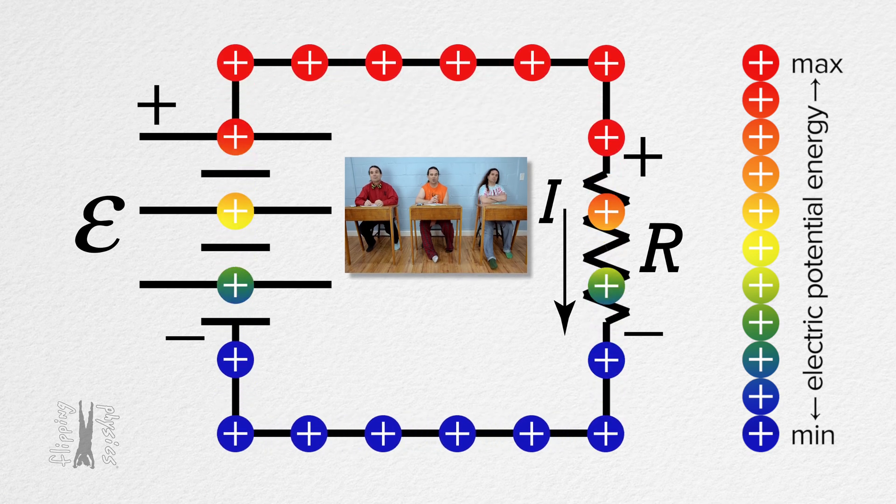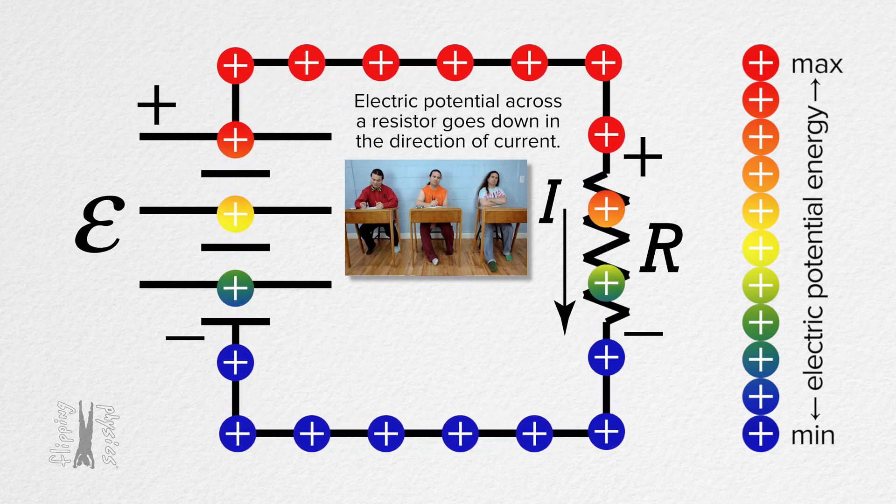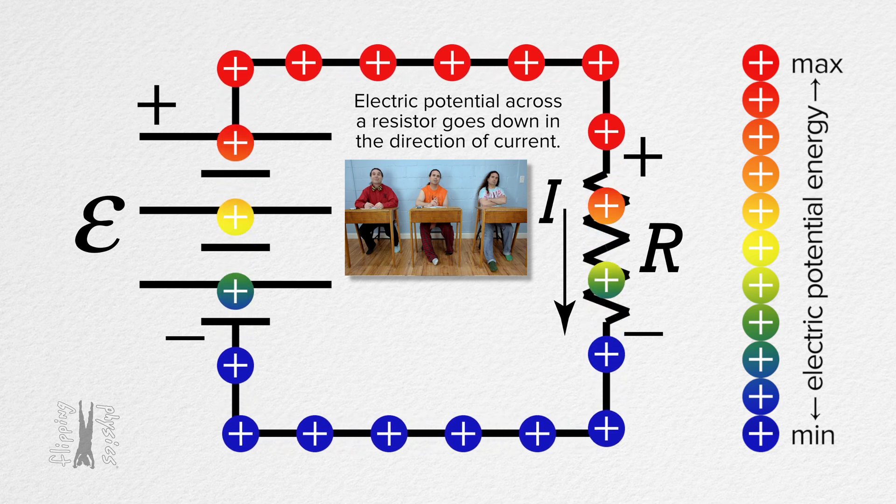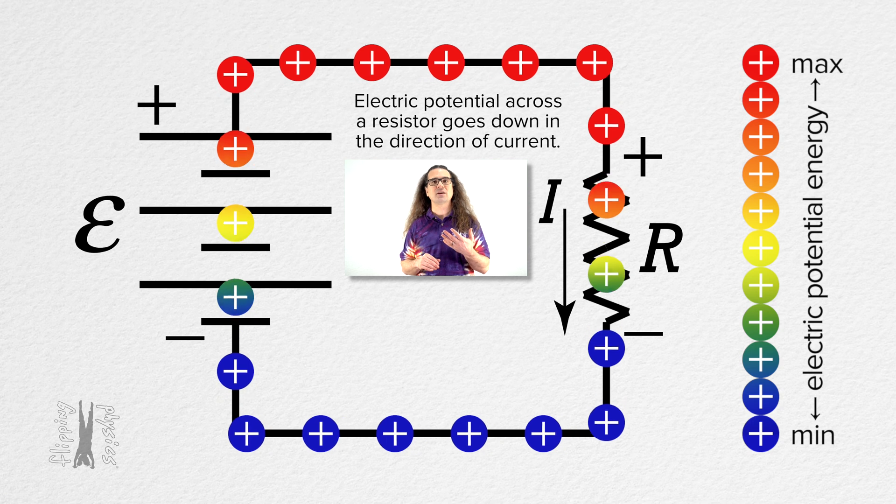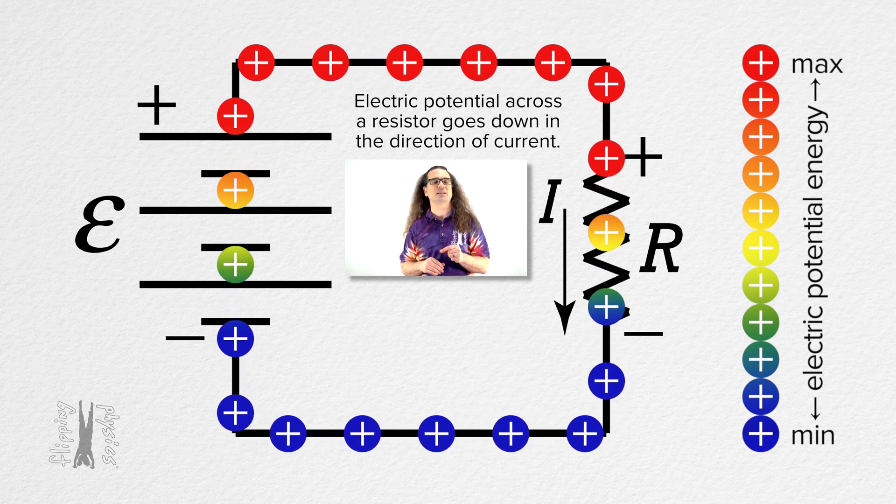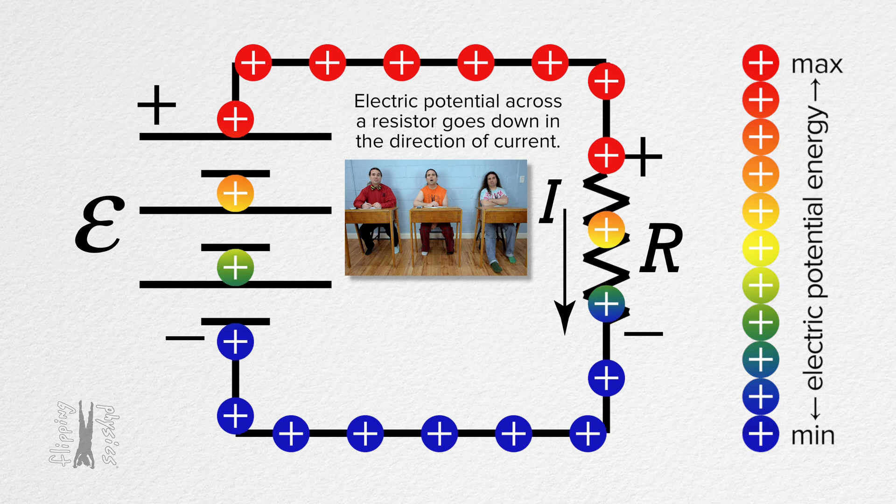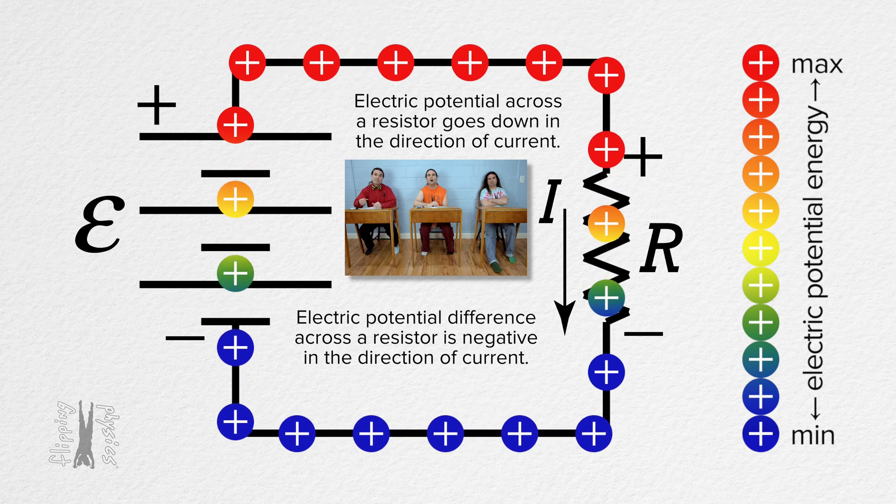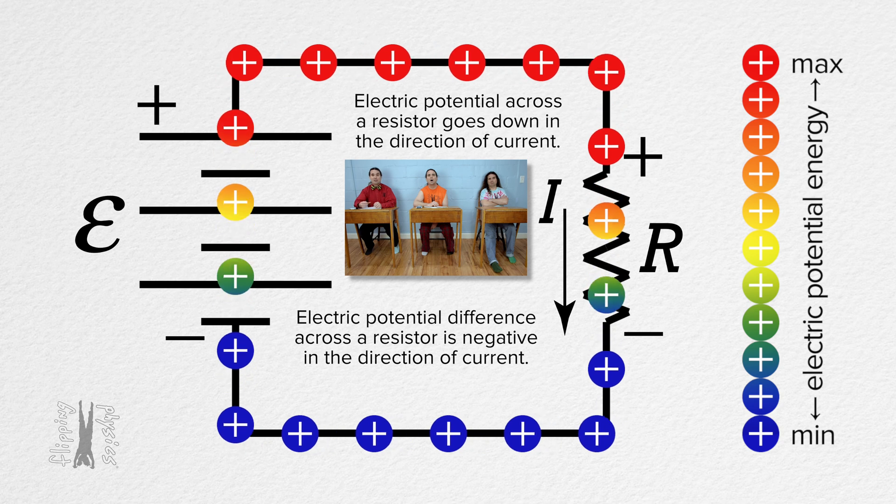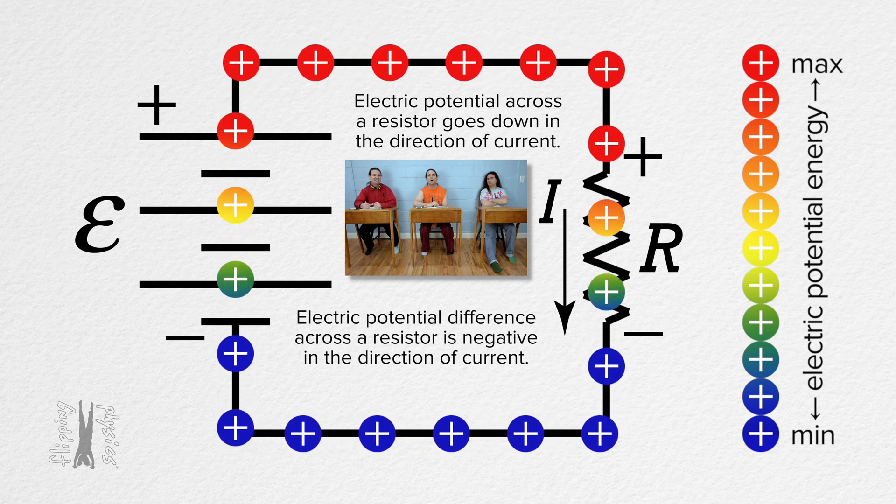Notice, this means the electric potential across the resistor goes down in the direction of the current, just like the electric charges moving through the resistor experience a decrease in their electric potential energy. Electric potential across a resistor decreases in the direction of current, so the electric potential difference in the direction of current across a resistor is negative. Got it.